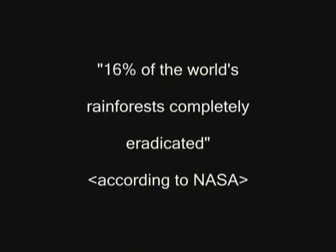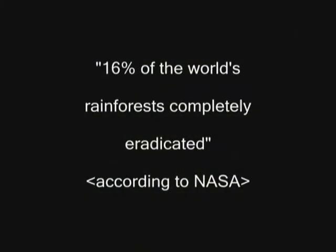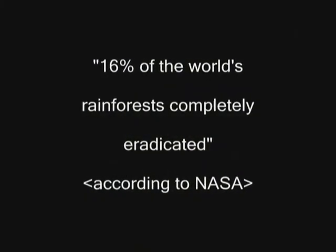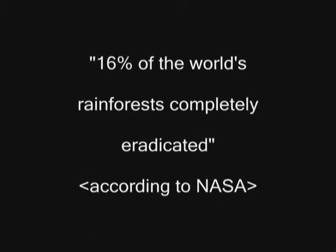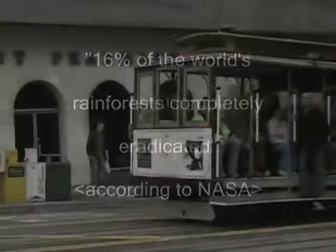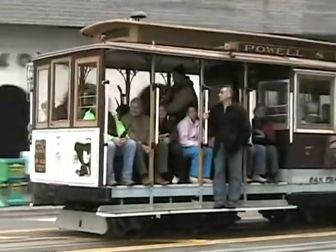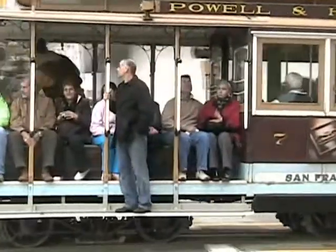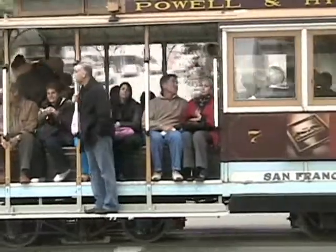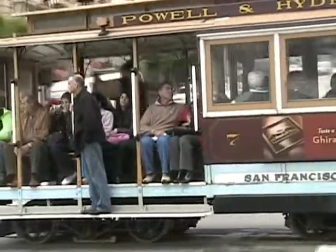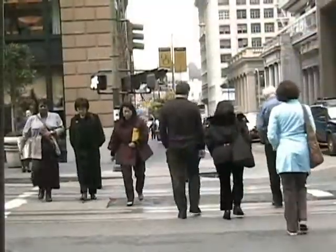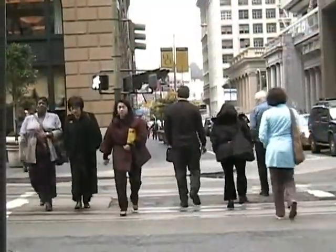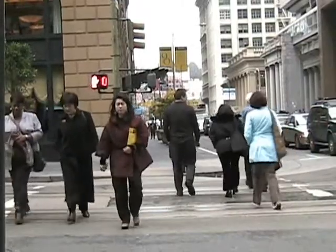Did you know in the past years, 16% of rainforests have been completely eradicated? And every second one tree is cut down for the production of magazine paper. Major factors of deforestation are urbanization, agriculture, paper, and logging.